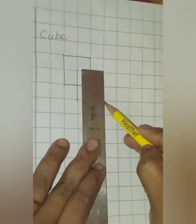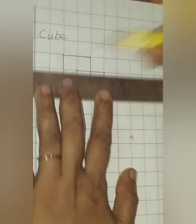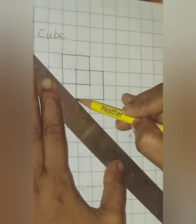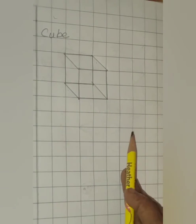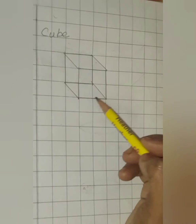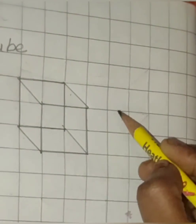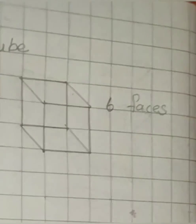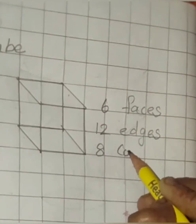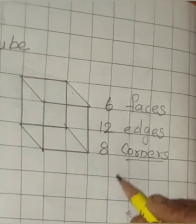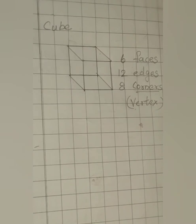Now let us draw the other square. Leaving one line, I am drawing the next square. Now let us join the corners of both squares. Our cube is ready now. Let us count the faces, edges, and corners. There are six faces in a cube, twelve edges, and eight corners. The corners can also be called a vertex. A cube has six equal flat faces.